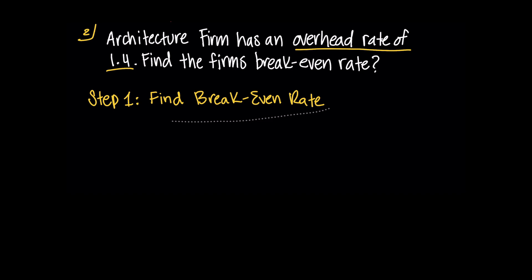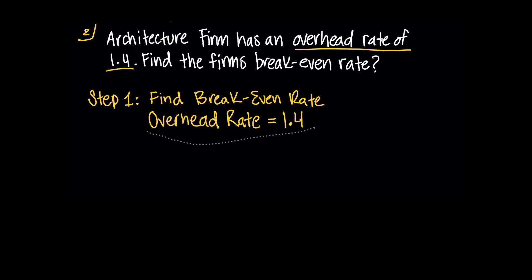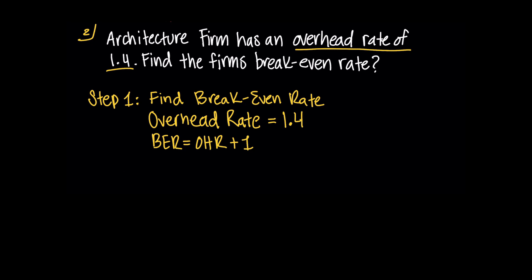Now let's solve the problem. Step one: what are we trying to find? Find the break-even rate, which is given as a unitless number. Let's identify the givens — we have an overhead rate of 1.4, so we can underline that in the problem. Also underline break-even rate, since that's what we're solving for. Now let's write the formula for break-even rate, which is the overhead rate plus 1. So in step two, we'll plug in the variables: break-even rate equals 1.4 plus 1, which equals 2.4. That was rather straightforward. Break-even rate should be in the target range of 2.3 to 2.5, so that is a healthy break-even rate.